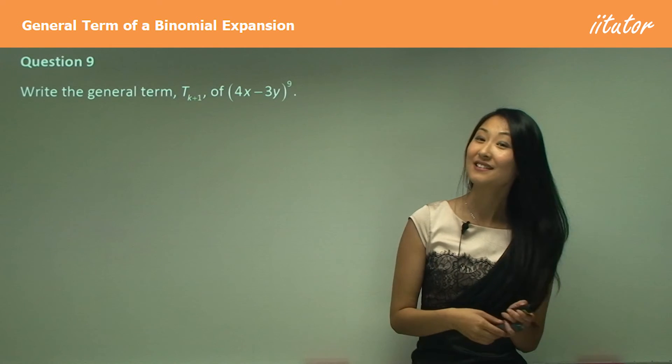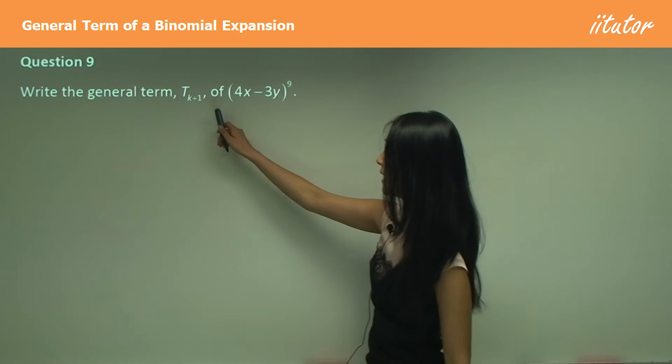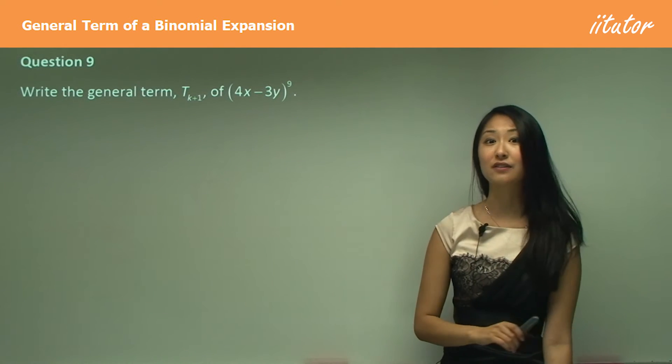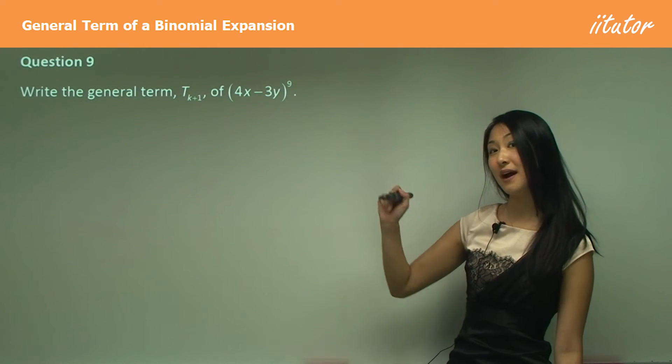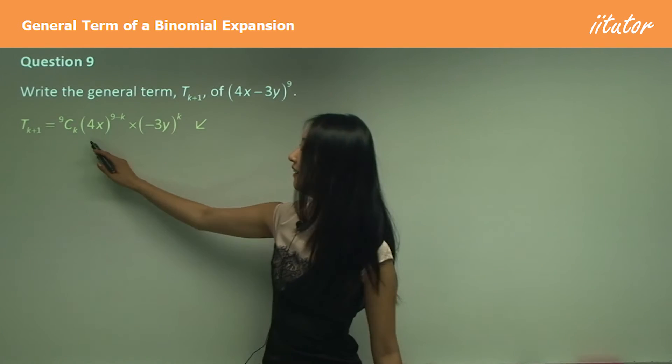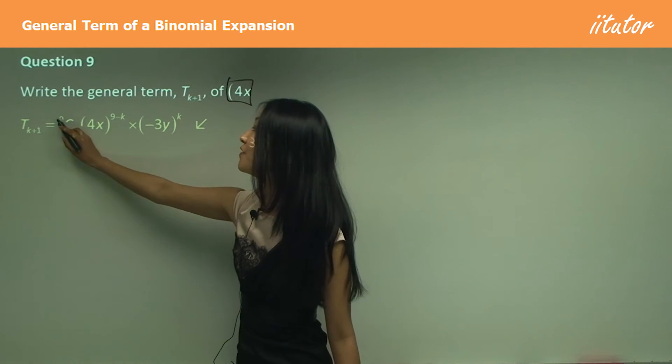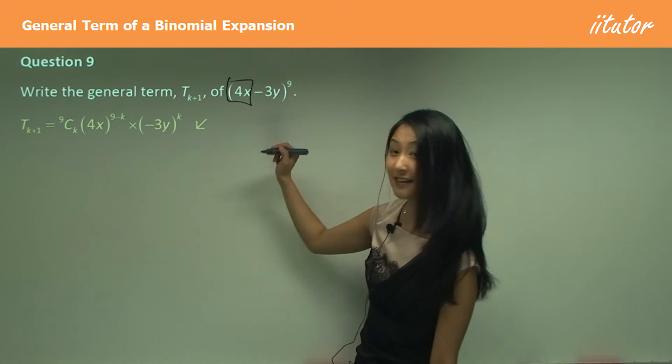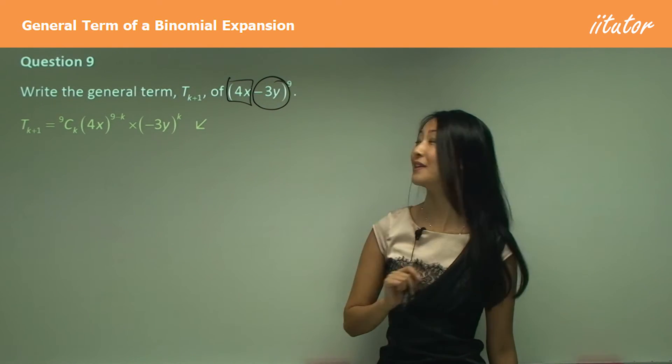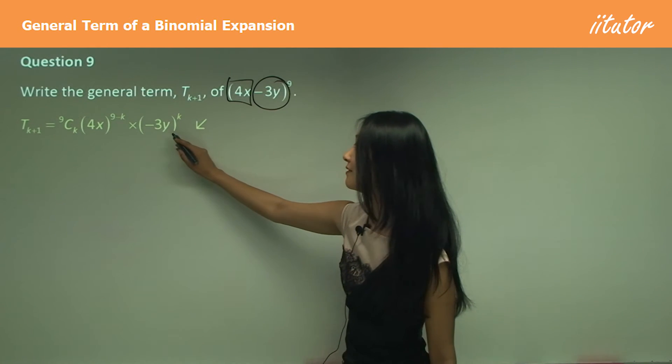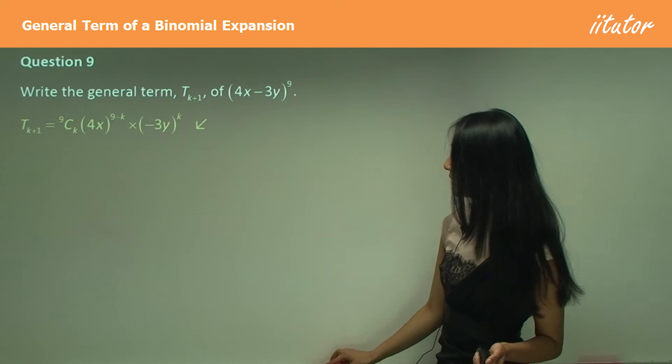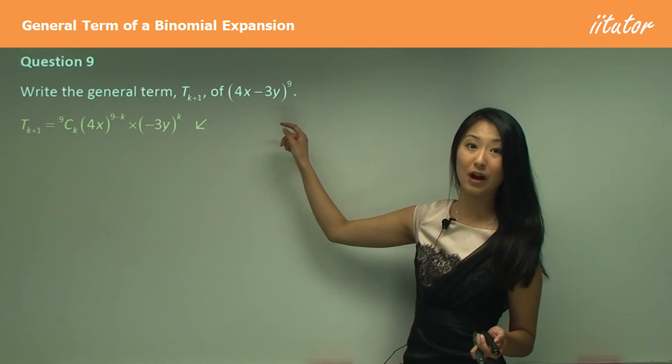Let's move on here to question nine. So here, I want you to try write the general term T_{k+1} for (4x-3y)^9. Okay, so have a go first before I show you the answer. So remember, we know it starts off with T_{k+1} and it equals, we're going to be starting off with 9Ck, right? And our first term here is (4x)^{9-k}, easy. And then multiplied by our second term, be careful here, because it's minus 3y, we take the whole negative 3y as our second term. So multiplied by (-3y)^k there. Easy. So only thing here you have to be wary of is if you see a negative there, you have to think of the second term as a negative, rather than just a minus.